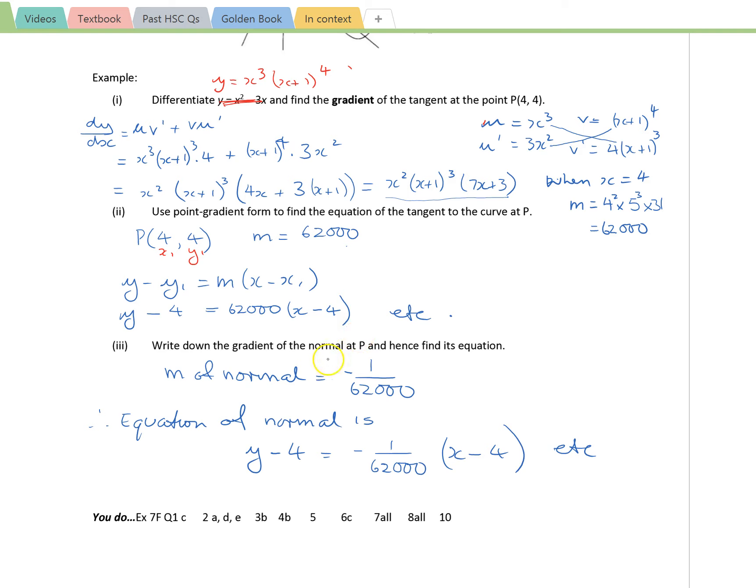Write down the gradient of the normal. Well, the gradient of the normal is minus the reciprocal of the gradient of the tangent. And you can see I've subbed that in without expanding these brackets and collecting like terms. So hopefully you'll be all right now to do exercise 7.